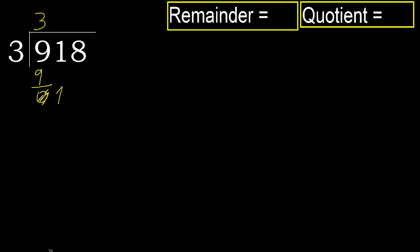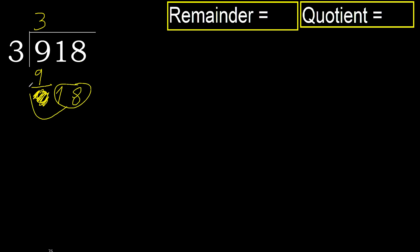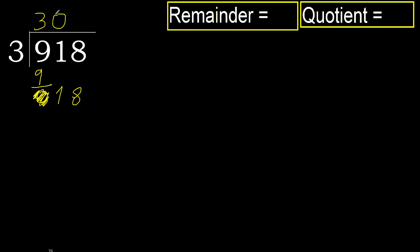Next, bring down 1. 1 is less, therefore move to next digit. Bring down to get 18. 18 is not less. There are 2 digits, therefore we need to complete with a 0 in the quotient for the previous step.